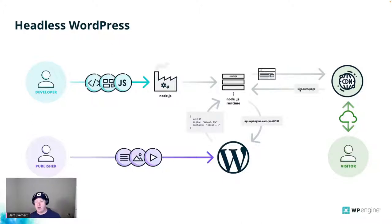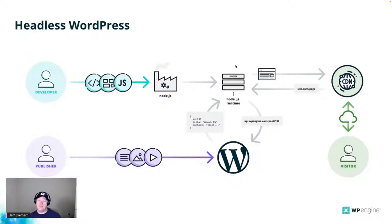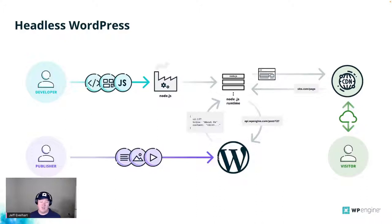When we make a request of this application, it looks at the particular URL and then makes the request back to WordPress core using its API, saying 'get me all of the data for the post with the ID of 137.' WordPress responds and returns data back. Once it gets back to this application, we get to make determinations about how that HTML or presentation ultimately gets sent back to the user.